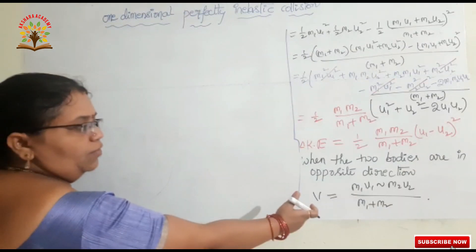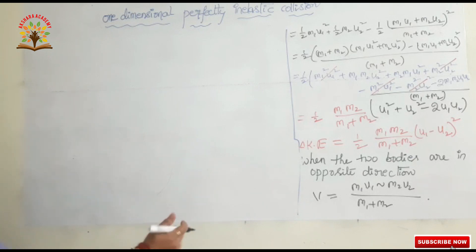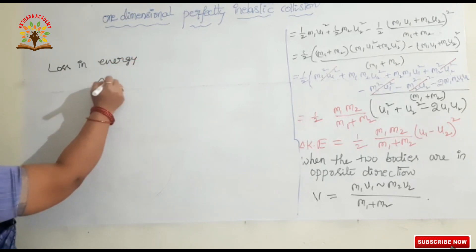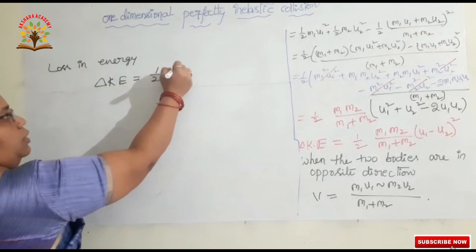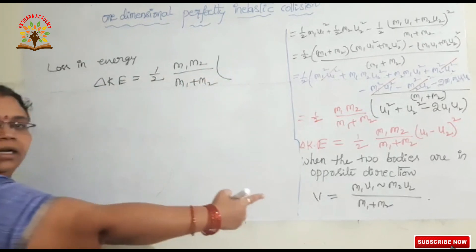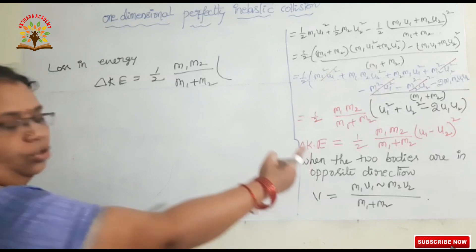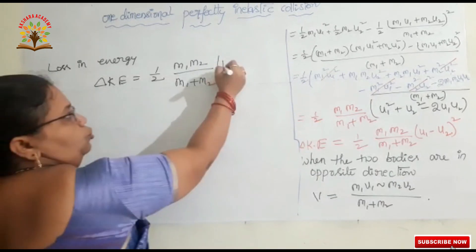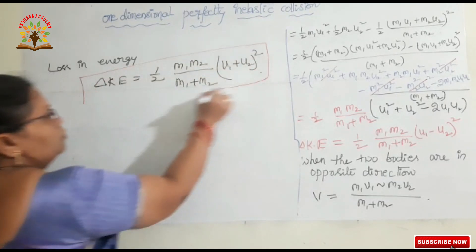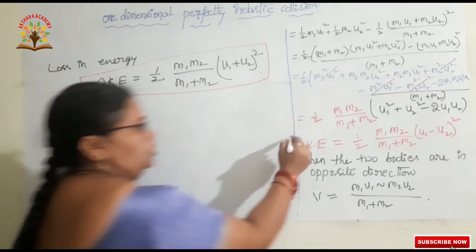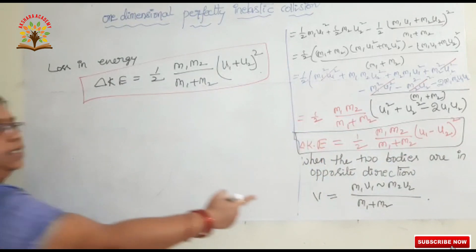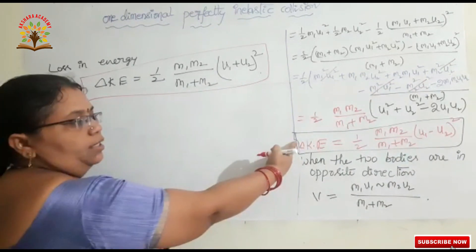After finding the common velocity when the two bodies are in opposite directions, the loss in energy delta KE = ½ · (M1·M2) / (M1 + M2) · (U1 + U2)². Here, since the two bodies are in opposite directions, U2 is considered as negative, giving us (U1 + U2)² in the expression. These two are the final expressions for loss in kinetic energy — one when bodies move in the same direction and one when they move in opposite directions.